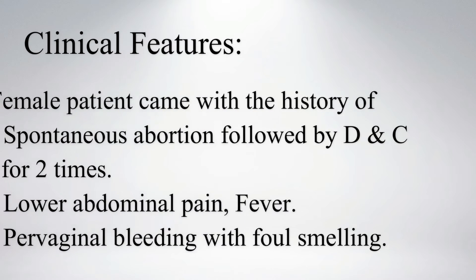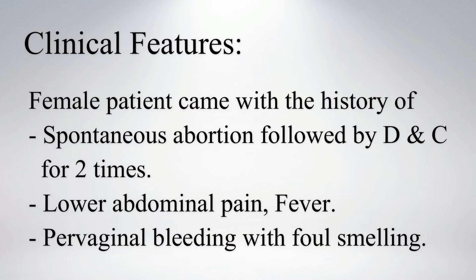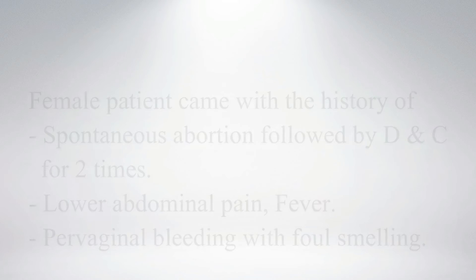Today we will see a case of endometritis. This female patient has a history of spontaneous abortion followed by D&C for two times. She also had lower abdominal pain, fever, and pervaginal bleeding with foul smell.